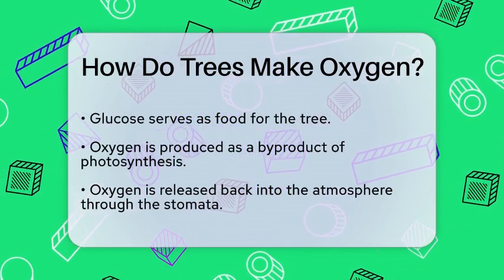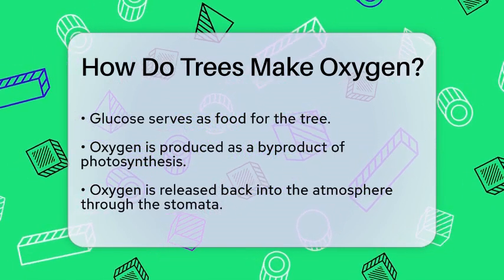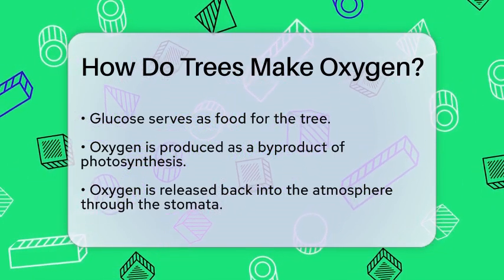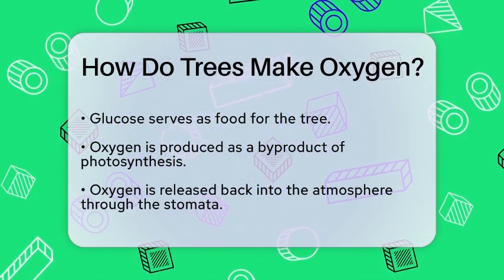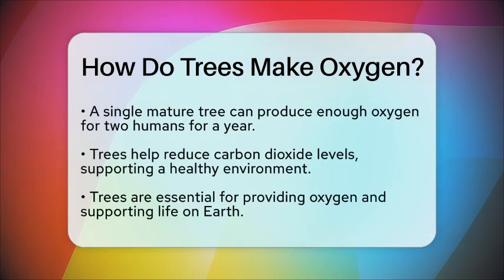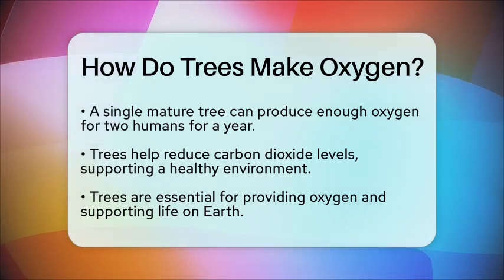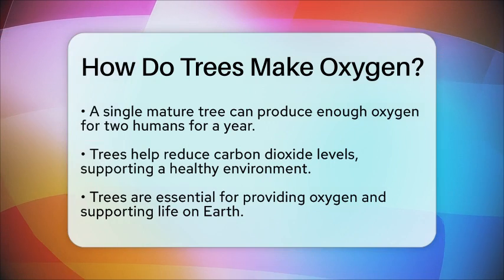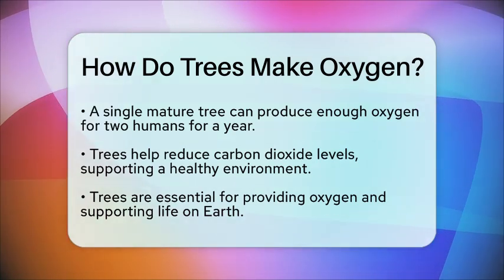This oxygen is then released back into the atmosphere through the stomata. In fact, a single mature tree can produce enough oxygen to support two human beings for a year. This process not only provides us with oxygen but also helps to reduce carbon dioxide levels in the atmosphere, making trees essential for a healthy environment.